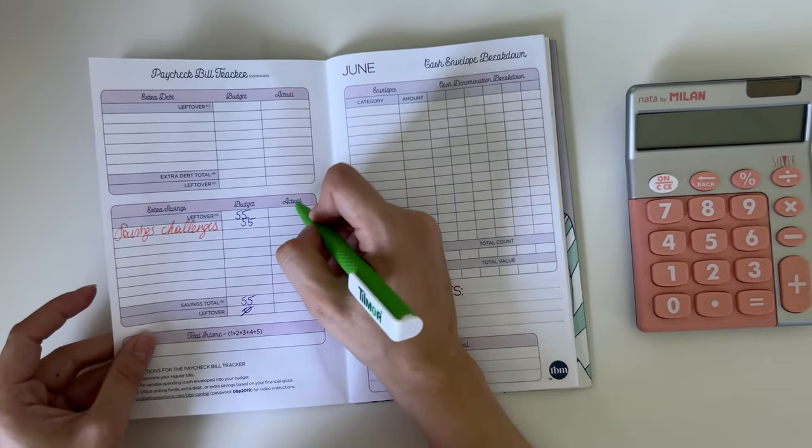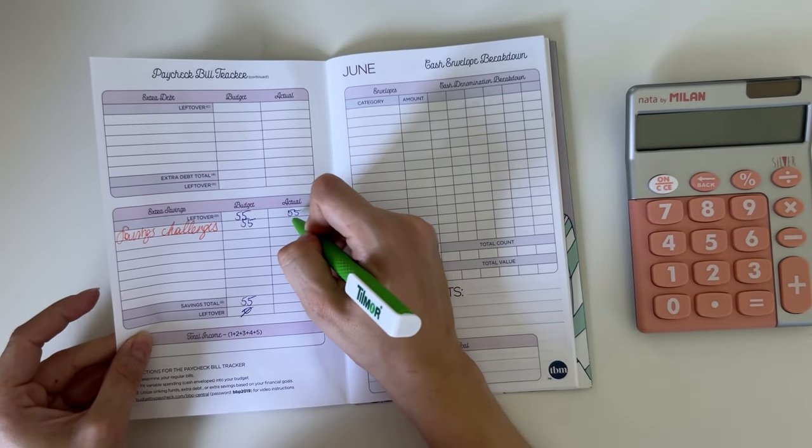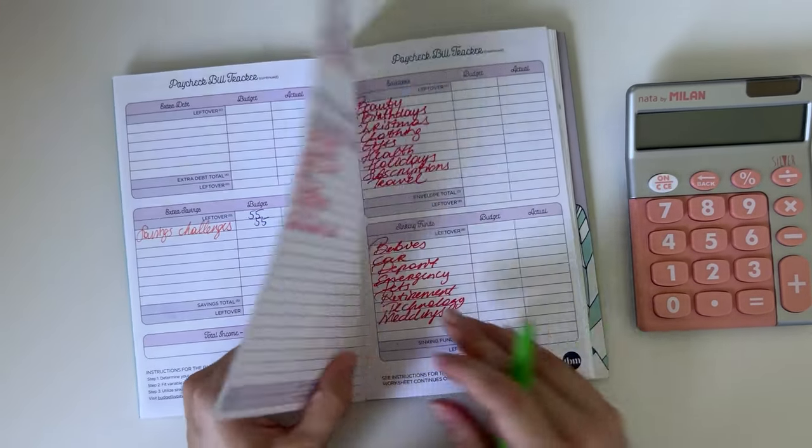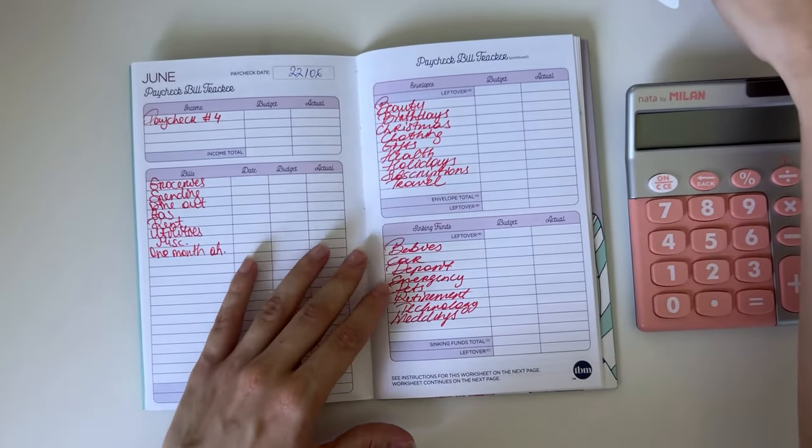All of that went into savings challenges, so nothing to work with, no rollover, no nothing. Let's flip through to this week's budget.